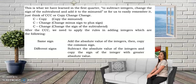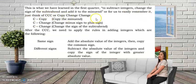So let us refresh your mind about the rules in subtracting integers — something we learned in the first quarter. To subtract integers, change the sign of the subtrahend and add it to the minuend. To easily remember it, just think of CCC, or Copy Change Change.